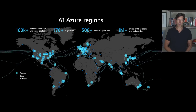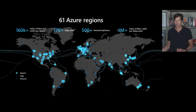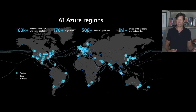We plan on launching many more. At this point, we're connecting all 61 of these regions with our dark fiber backbone, which consists of over 160,000 miles and growing of connections between regions. If your traffic enters one of our regions on one side of the planet and traverses to another region, it stays on our dark fiber backbone.